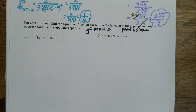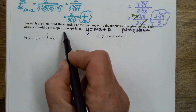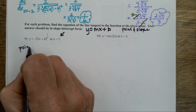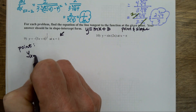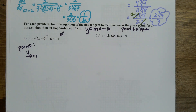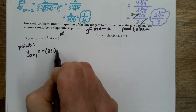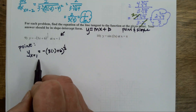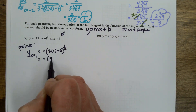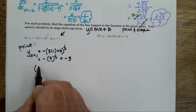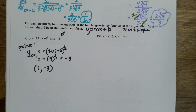Both forms — slope-intercept or point-slope — still require a point and a slope. I don't have either of those. I have an x value and that is it. I can use that x value to find both the point and the slope. To find the point, I evaluate the actual function at 1 — that means: what is y when x is 1?